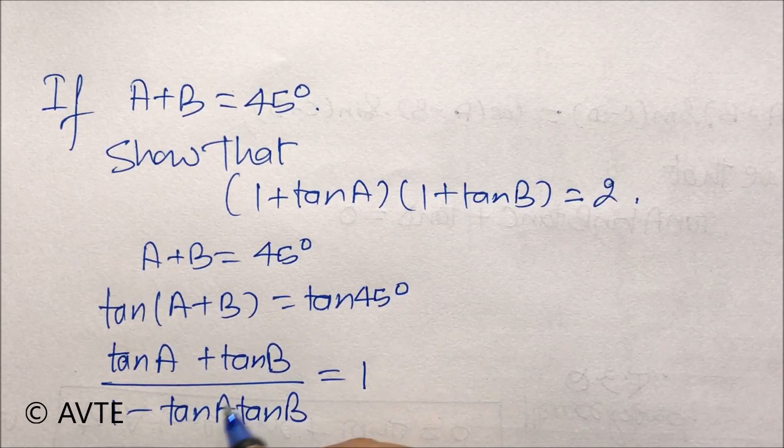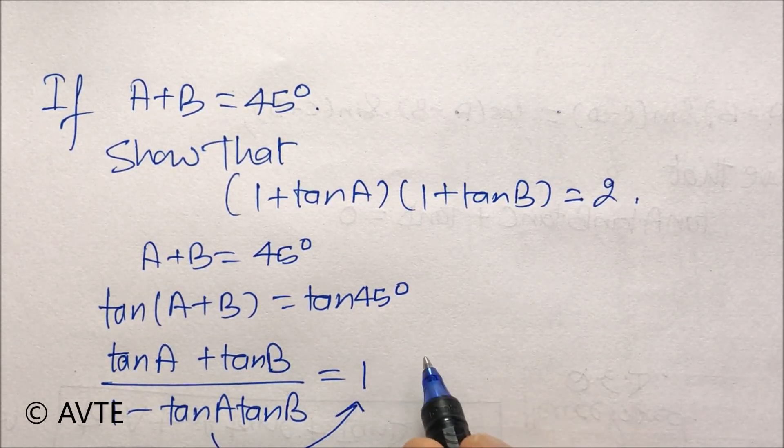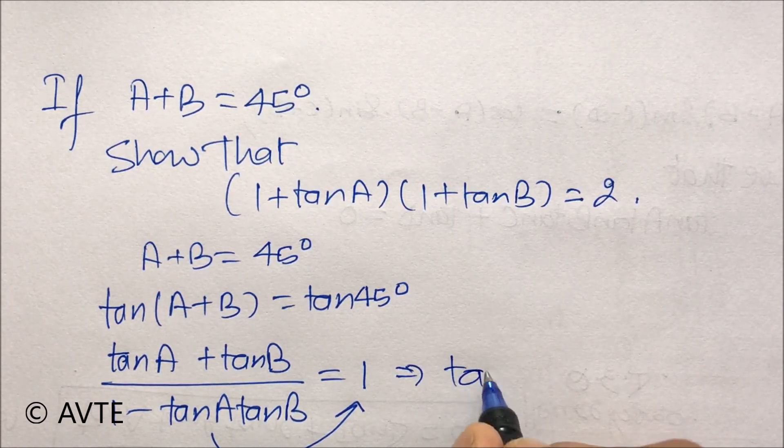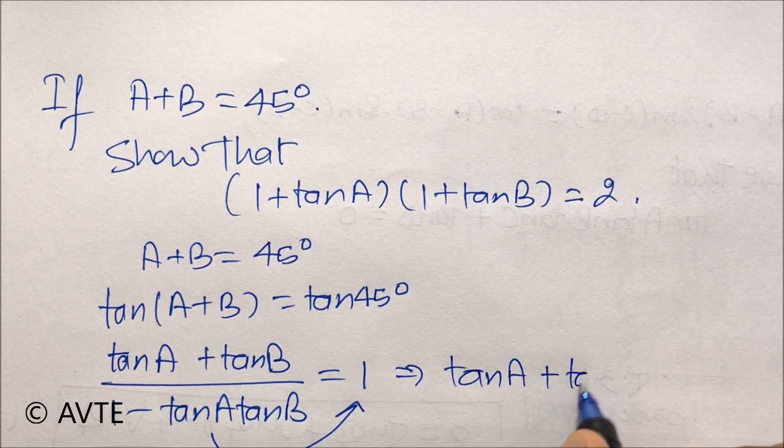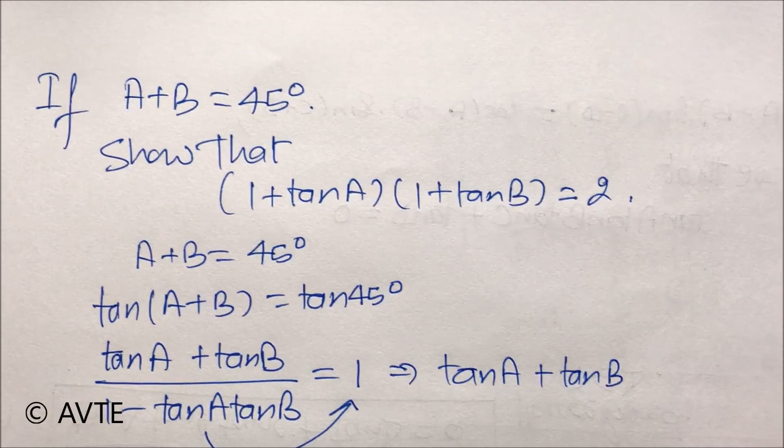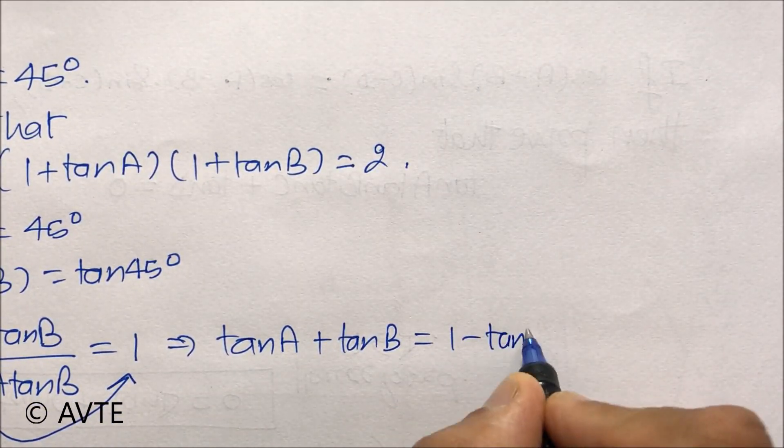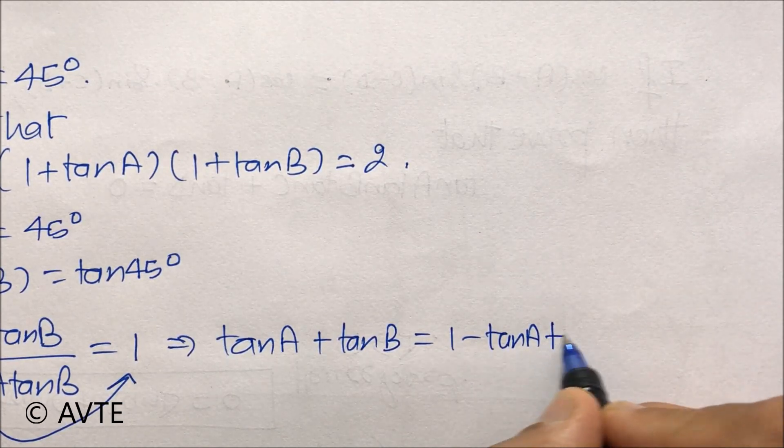The other side is 1, so now you cross multiply the denominator and you get tan A + tan B is equal to 1 - tan A tan B.